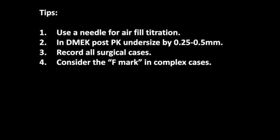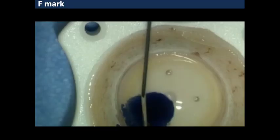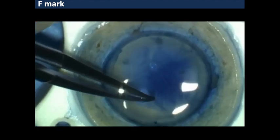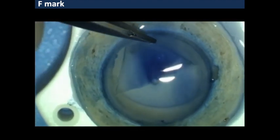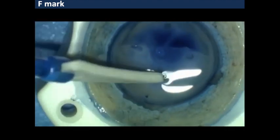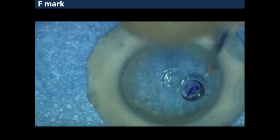A few tips: using a needle for air fill titration is beneficial in DMEK post-PK. The evidence suggests we should undersize the DMEK graft by 0.25 to 0.5 mm. I strongly suggest recording your surgical cases. In complex cases, consider using the S mark or F mark for orientation. The DMEK tissue is peeled partially, a skin punch is used to punch the stromal layer endothelial side up, the lenticule is repositioned, and the stromal punch is reflected to complete the mark. The F mark or S mark can definitely help with graft orientation in difficult cases.